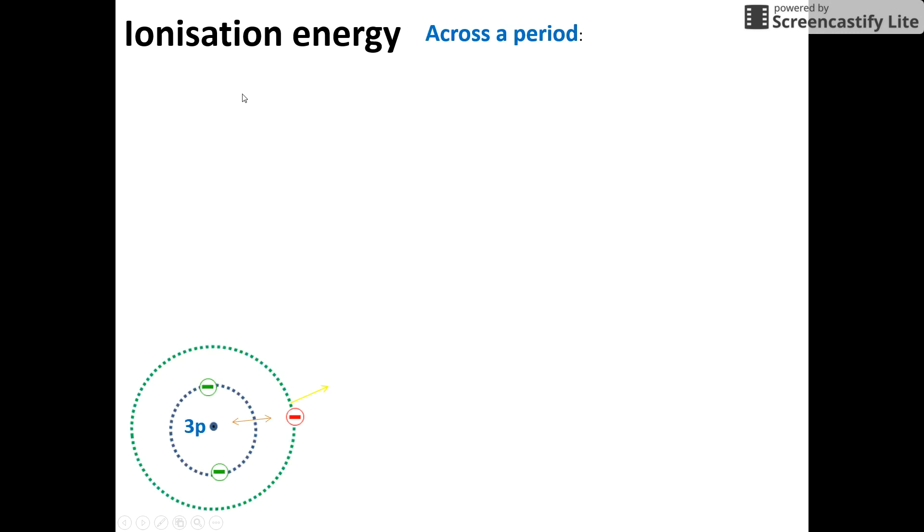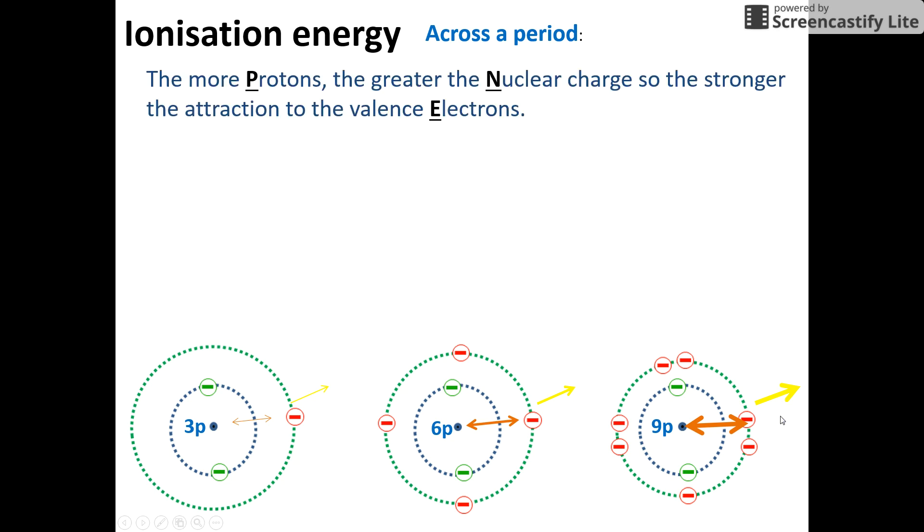So let's look at how it changes across a period. And you'll see as I go, you've seen these diagrams before in the previous video, three protons to six protons to nine protons as I go from lithium to carbon to fluorine. And you can see from the yellow my ionization energy is increasing. And it's the same as what we had for atomic radius in terms of I am having more protons as I go across a period, therefore my nuclear charge is increasing.